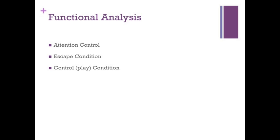In the escape condition, the instructor told the children it was time to work and presented instructional stimuli in the form of matching tasks until the children engaged in aggressive behaviors, in which case the children would receive a 30-second break. In the control play condition, preferred items were made available and the instructor gave non-contingent attention except when aggressive behaviors occurred. The tangible condition consisted of access to a preferred item for one minute before the session and then during the session contingent upon aggressive behaviors.